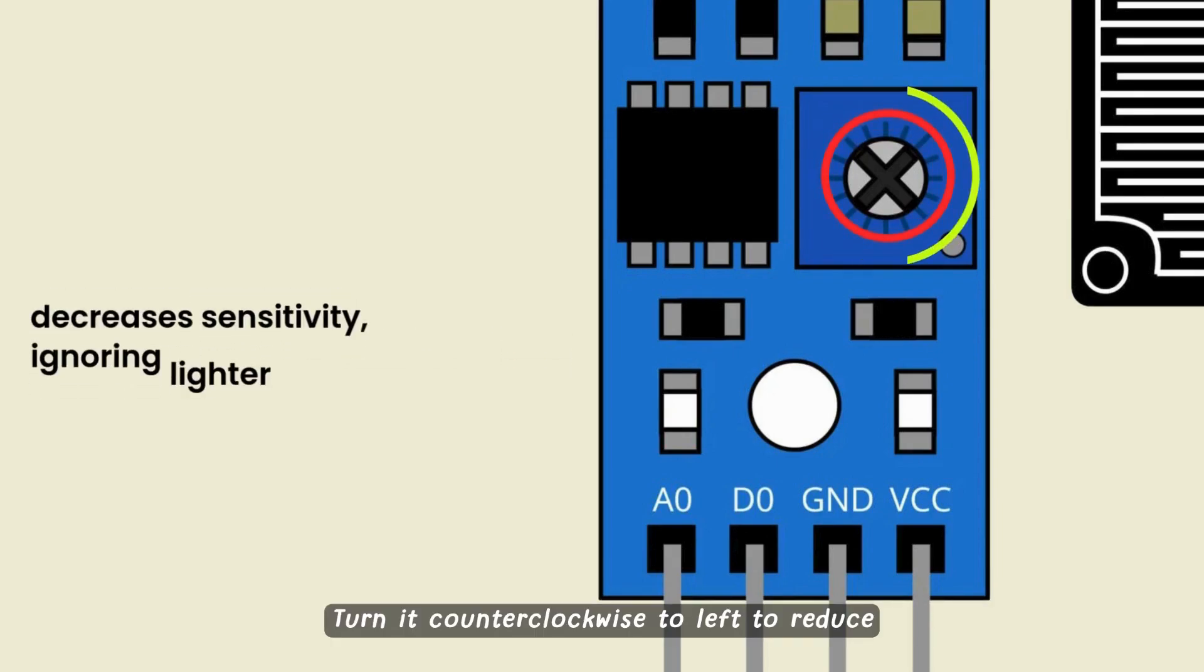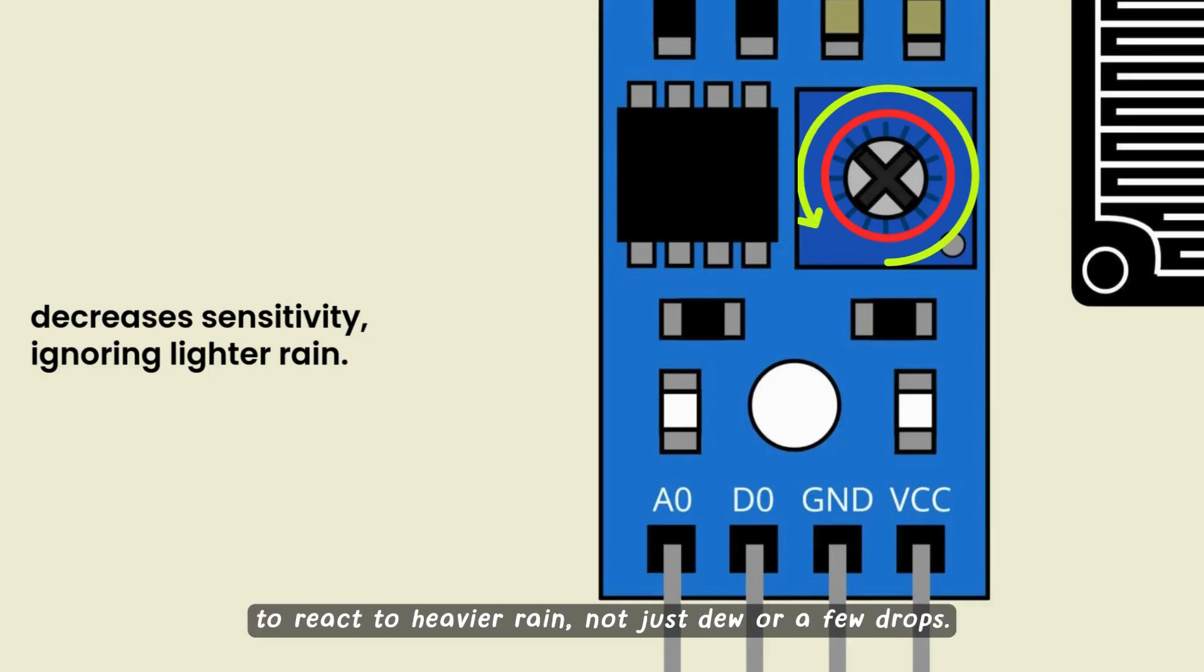Turn it counterclockwise to the left to reduce sensitivity. Perfect if you only want it to react to heavier rain, not just dew or a few drops.